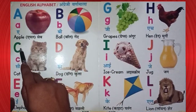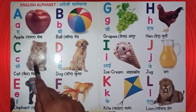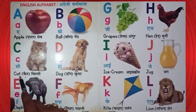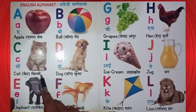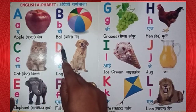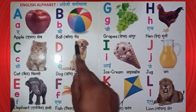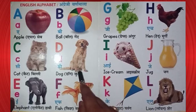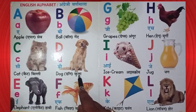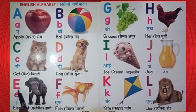C. C for cat. Cat means billy. D. D for dog. Dog means kutta.